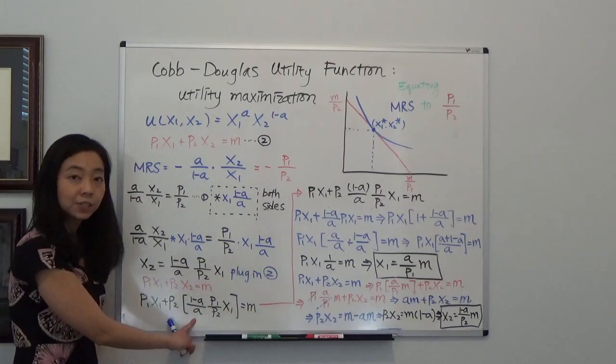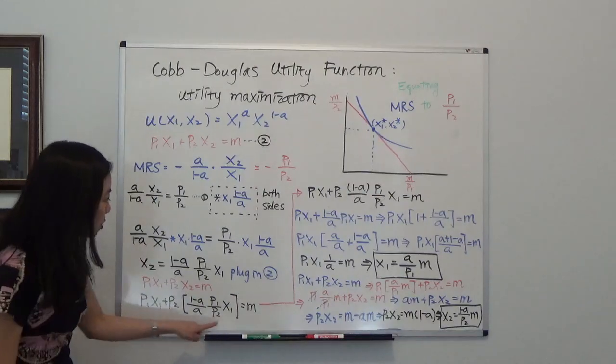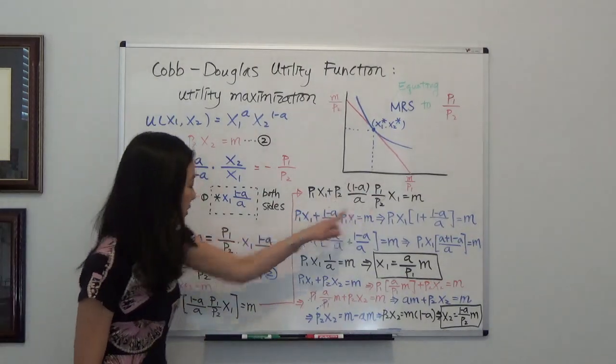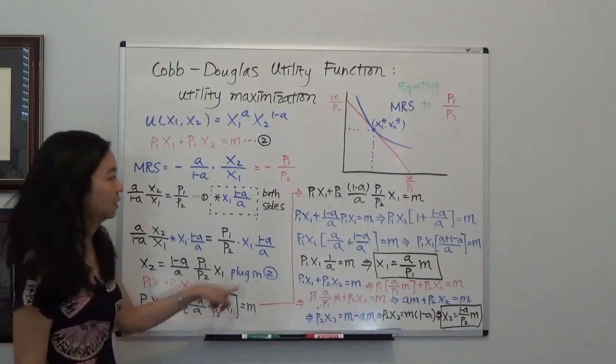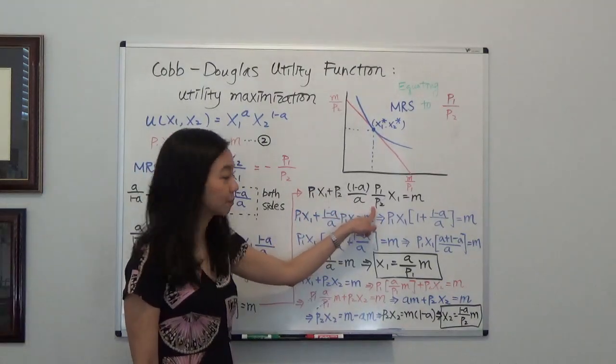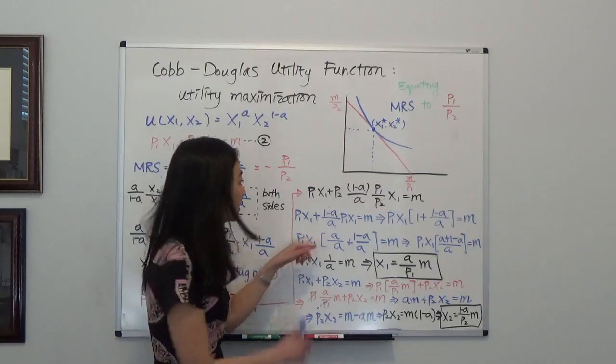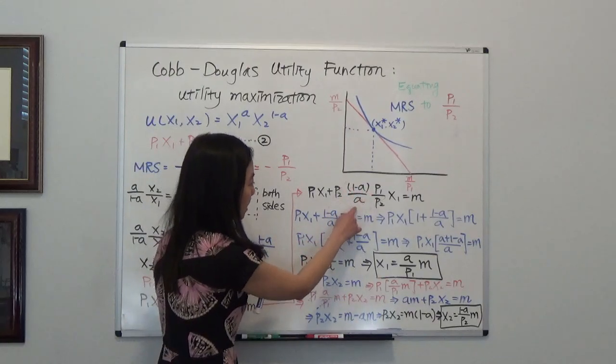So you're left with this. And I'm going to move here. Notice that I can cross out p2 and p2 here. So I'm going to cross that out.